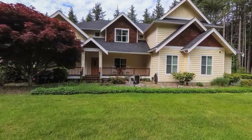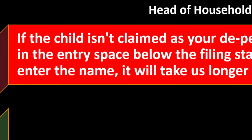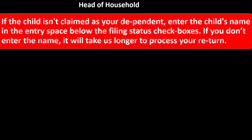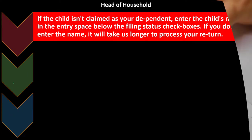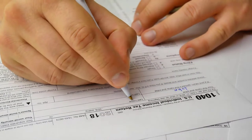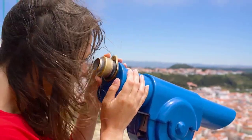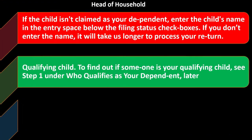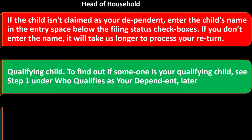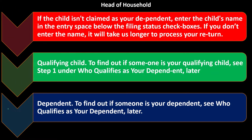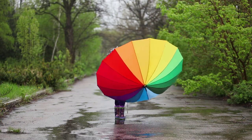If the child isn't claimed as your dependent, enter the child's name in the entry space below the filing status checkboxes. If you don't enter the name, it will take longer to process your return. If you're filing head of household and the person is not listed as a dependent on the first page of the return, you still want to put that information in place so the qualification for head of household can be verified. To find out if someone is your qualifying child, see step one under who qualifies as your dependent.